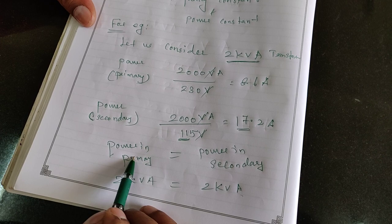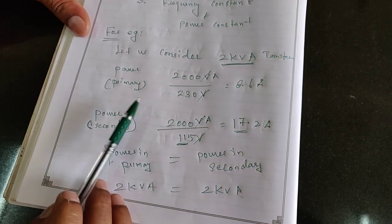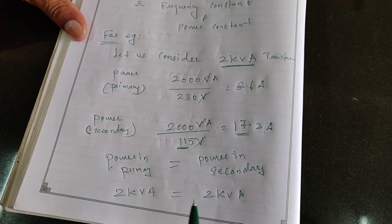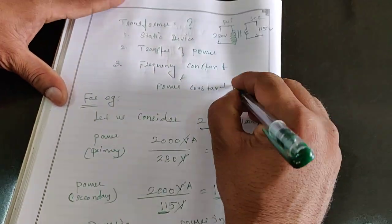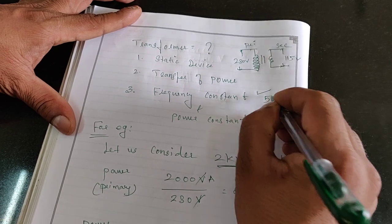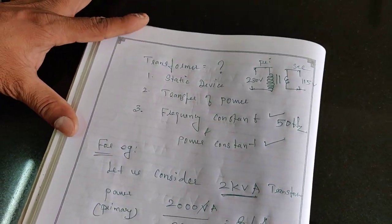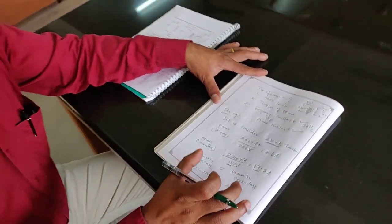So when I say primary power and secondary power, primary power is considered as 2 kVA, secondary power is considered as 2 kVA. Therefore, 2 kVA equal to 2 kVA, it means that the power is constant as well as the frequency is kept as constant as 50 hertz. This is the basics and fundamental of transformer.